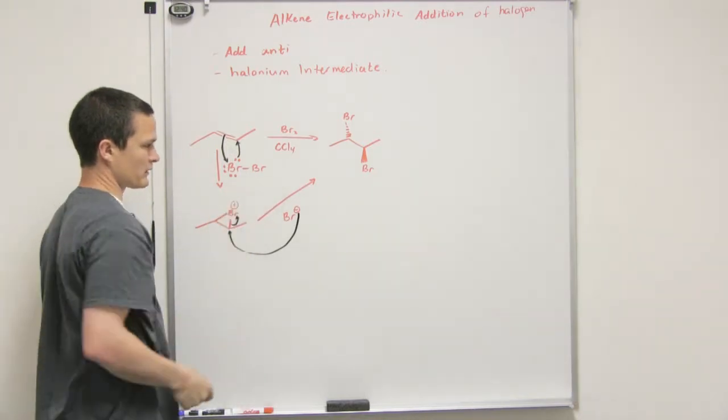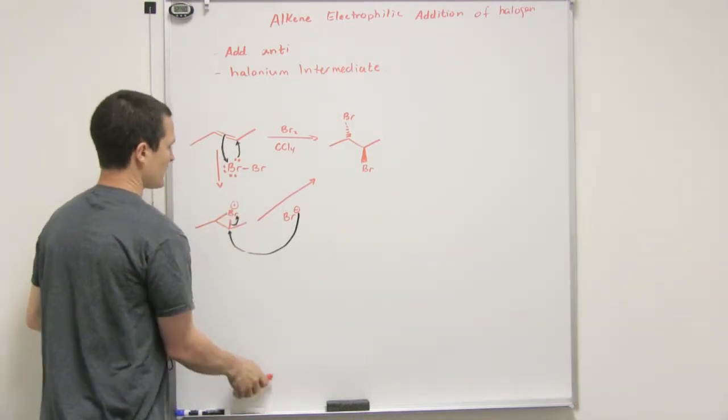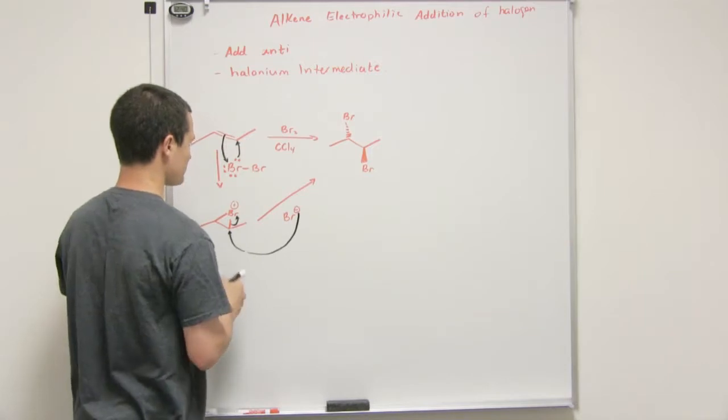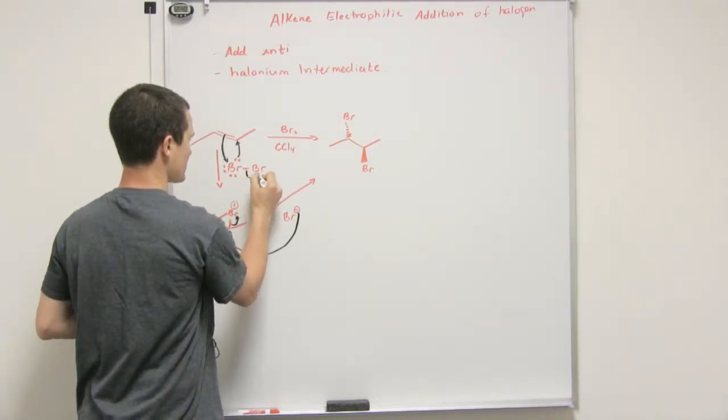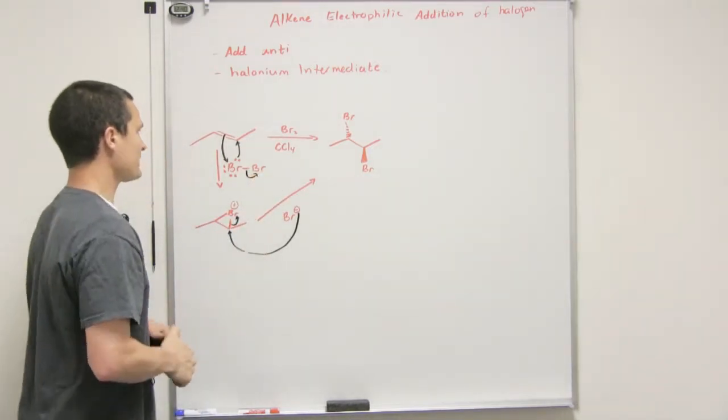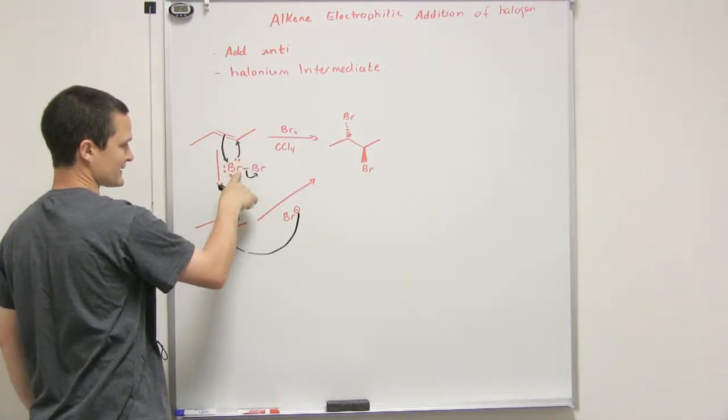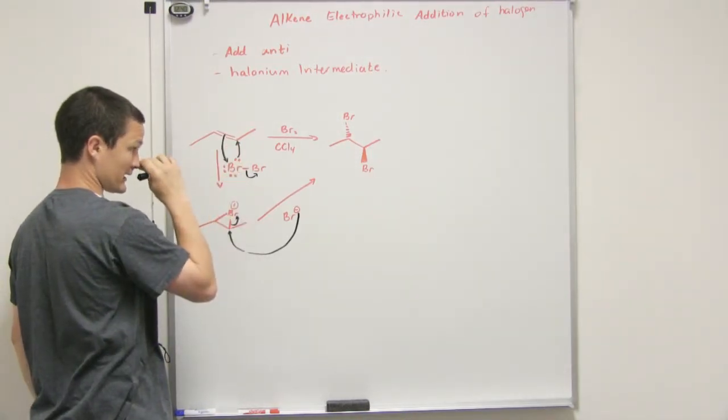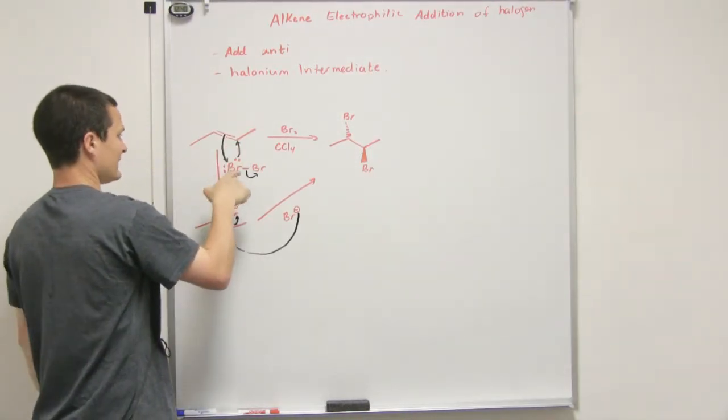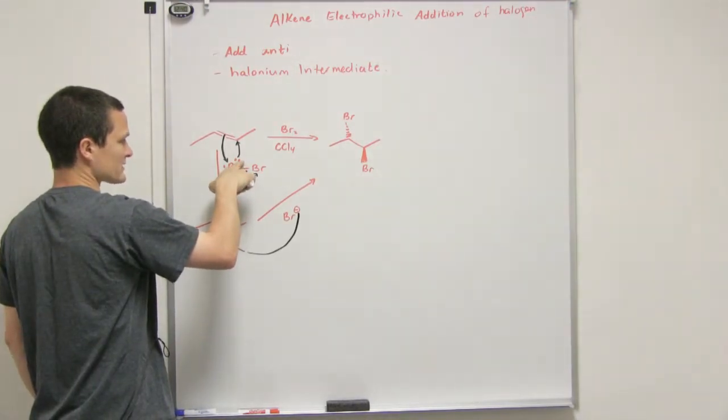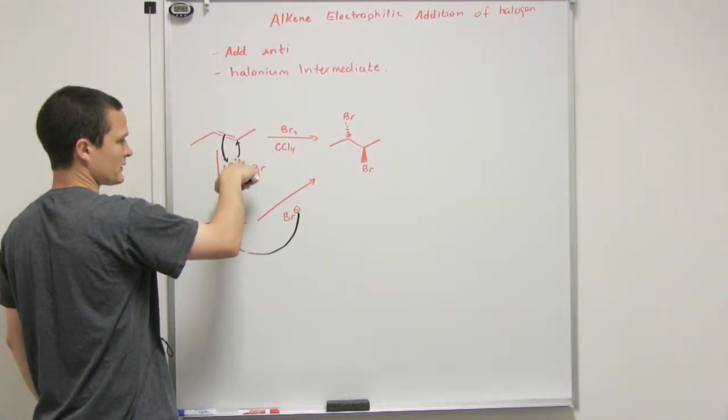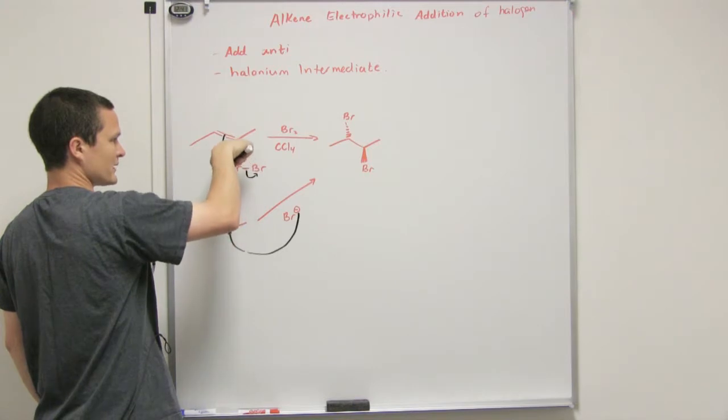We would expect some dipole in the molecule to exist somehow. We have the alkene attack this thing as though it were an electrophile, and in return, one of the lone pairs in the bromine will add to the other carbon.